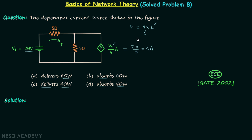Our main aim is to find the voltage across the dependent current source, and once we have the voltage we can multiply it with the current to get the power. The voltage across the current source is the difference in potential between the two terminals — noting that certain points share the same potential.